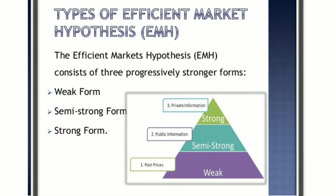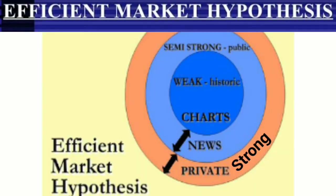EMH has three forms: weak form, semi-strong form, and strong form. Strong form relates to private information. Semi-strong form relates to public information. And weak form relates to past prices or historical information.